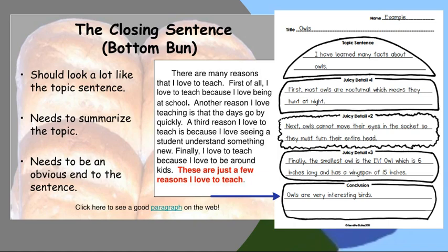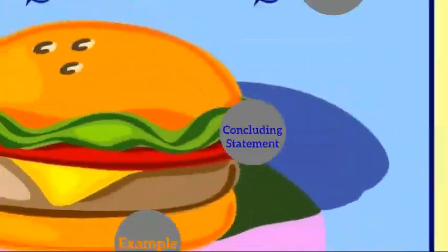I cannot, for example, end my paragraph by saying, Finally, the smallest owl is the elf owl, which is six inches long and has a wingspan of 15 inches. This doesn't properly end my paragraph. However, if I say owls are very interesting birds, I ended my paragraph in a proper way.